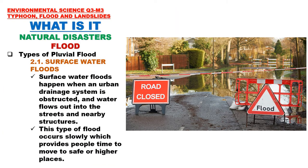Types of pluvial flood: First is surface water floods. Surface water floods happen when an urban drainage system is obstructed — when drainage is blocked, water flows out into the streets and nearby structures. This type of flood occurs slowly, which provides people time to move to a safe or higher place. Drainage obstruction is often caused by garbage.